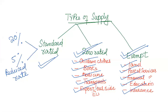As far as the rates are concerned: exempt supply is outside the scope of VAT; zero rated supply carries a zero rate; standard rated supply carries a rate of 20%; and sometimes there is a reduced rate of 5% applicable on selected items.